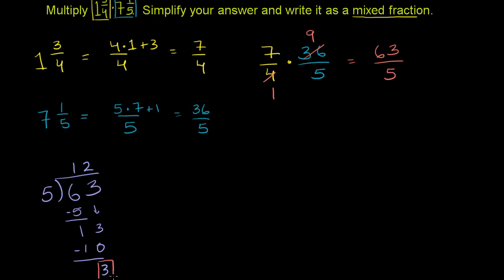You have a remainder of 3. So 63 fifths is the same thing as 12 wholes and 3 left over, or 3 fifths, or 3 fifths left over.